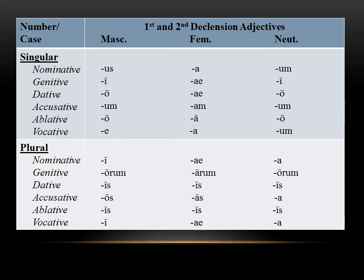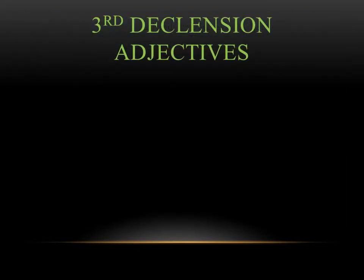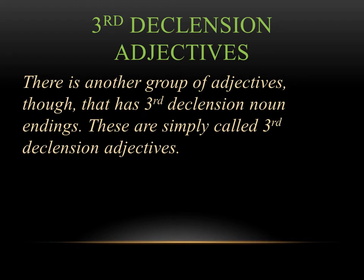A trick to remember these endings is that first and second declension adjectives are always going to have the exact same ending as the noun they modify. So if you have a first and second declension noun modified by a first and second declension adjective, they're going to have the exact same ending. Now we want to talk about another group of adjectives — the third declension adjectives. They're called this because they share the same endings as third declension nouns. This is our second category or group of Latin adjectives.